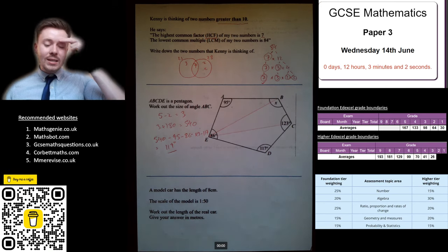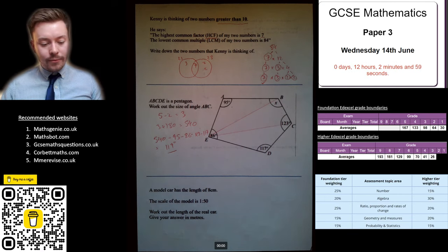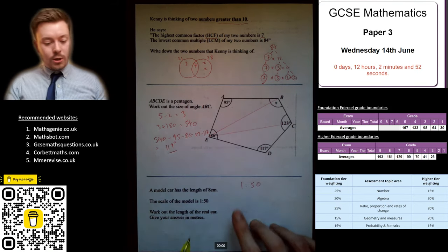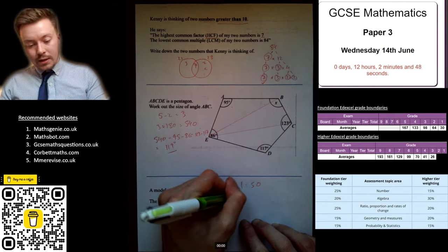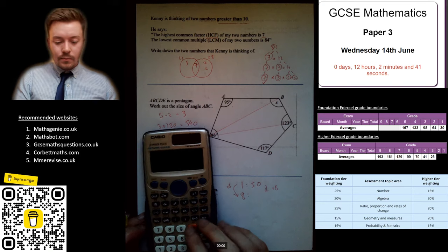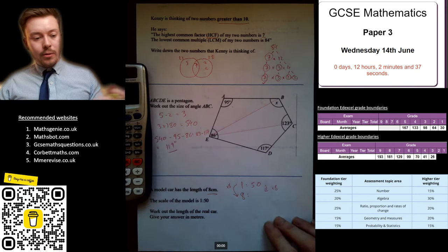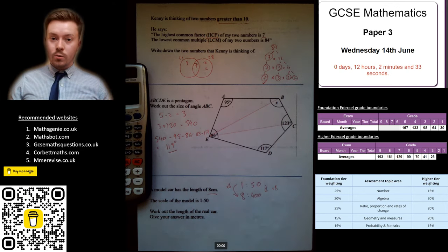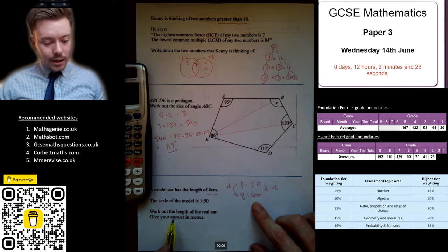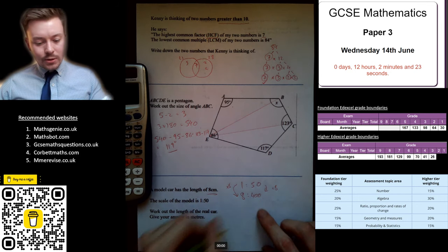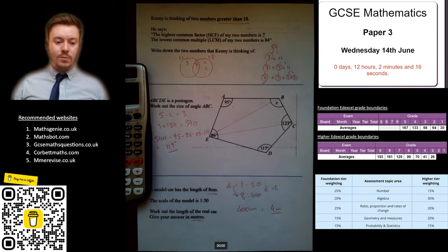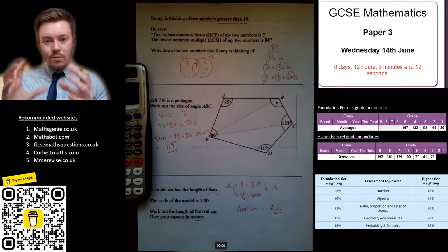The next question: a model car has a length of 8 cm. The scale of the model is 1:50. Work out the length of the real car. The model is the smaller one, so multiply 50 by 8 to get 400 cm. The question asks for the answer in metres: 400 cm ÷ 100 = 4 metres. Centi means a hundredth.